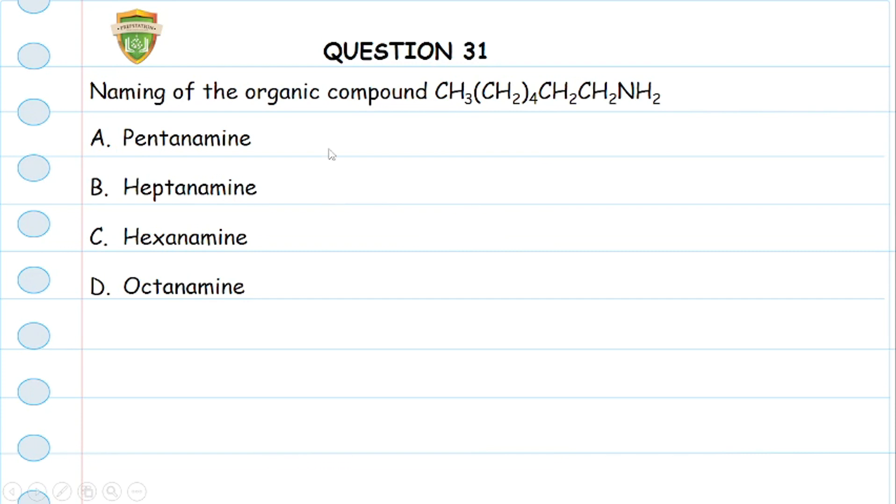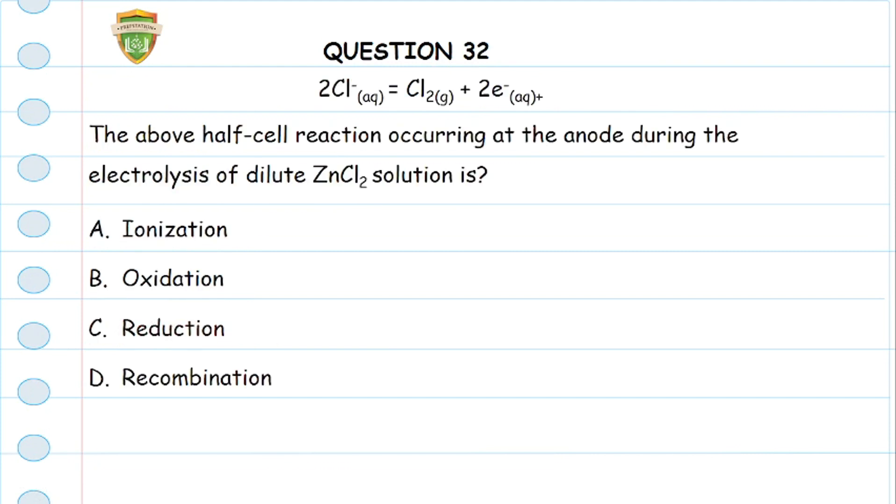Question 32: We have a half cell reaction given here. The question says the above half cell reaction is occurring at the anode during the electrolysis of dilute zinc chloride solution. We know that in half cell reactions what occurs at the anode is oxidation, and at the cathode is reduction. Since this question is talking about occurring at the anode, we know that it is oxidation, which is option B.